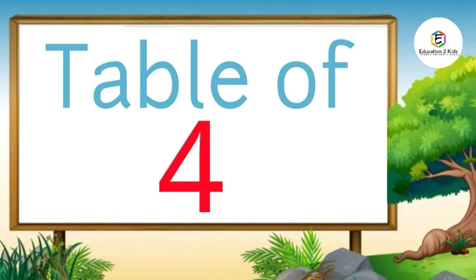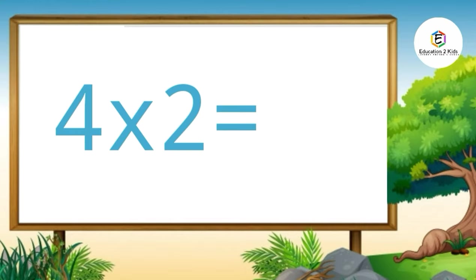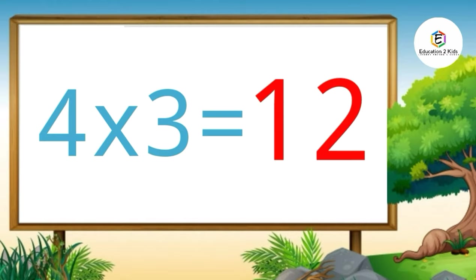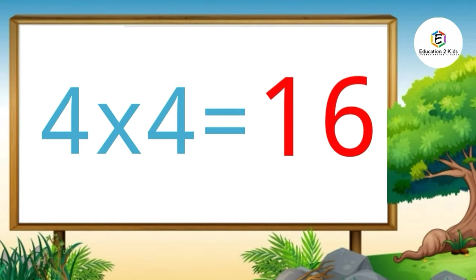Table of four. Four ones are four. Four twos are eight. Four threes are twelve. Four fours are sixteen.